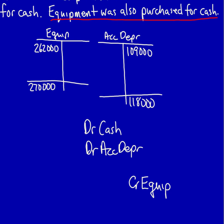The next step is to use the income statement to fill in whatever we can. Looking at the income statement, we see immediately that it includes depreciation expense of $24,000, so we can fill in that information. The income statement also shows a gain on sale of equipment of $3,000, so we can fill that in now.